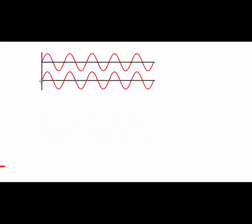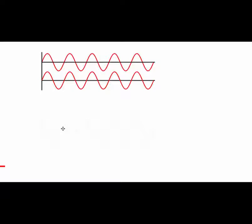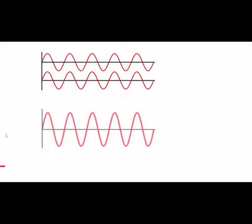The principle of superposition means that we algebraically add up the displacements at any point. At time zero, both waves have a displacement of zero, so the resultant wave would also have a displacement of zero. At the peak, both waves are at the peak at the same time. Both waves hit zero again at the same time, and both waves have their trough at the same time. Therefore, by adding the two waves together, the resultant wave looks something like this.